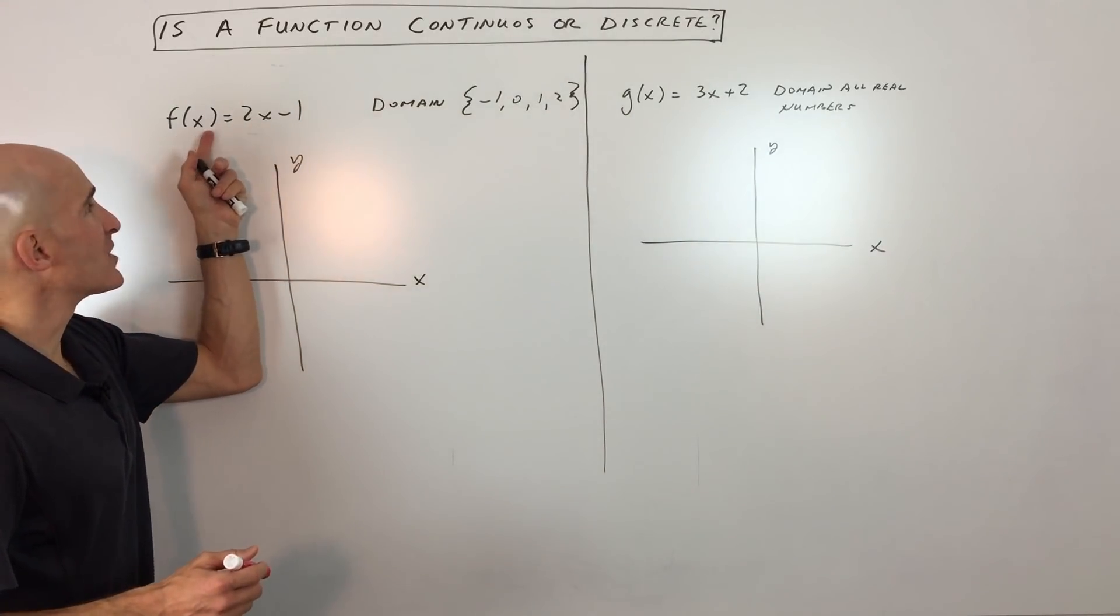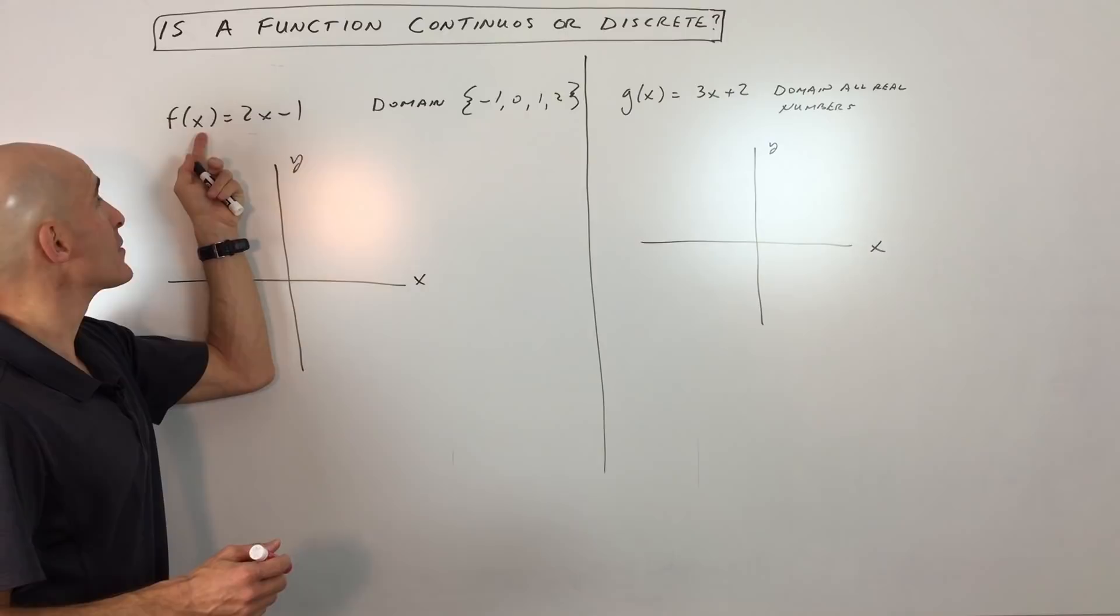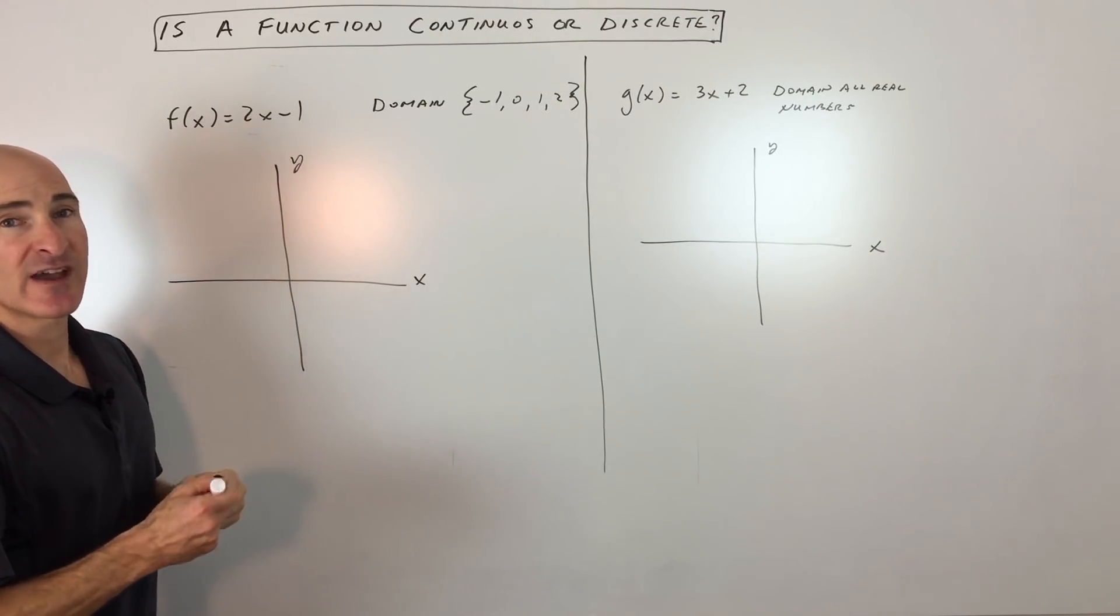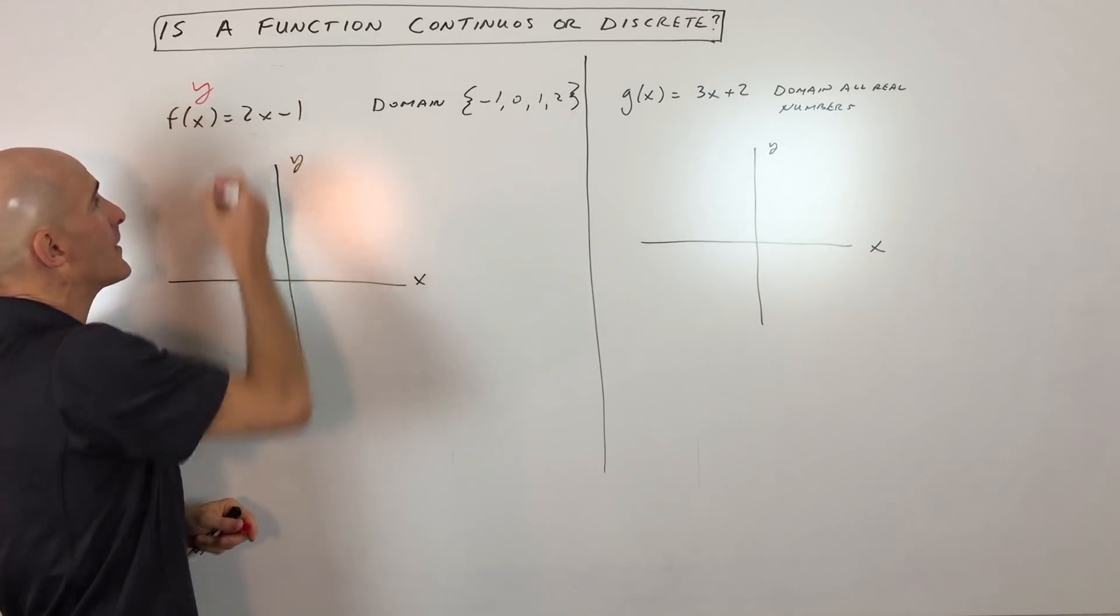So this first example, we have this function, and we're using the function notation you can see here. f of x equals 2x minus 1. Now you can think of the f of x just like a y, that's the output.